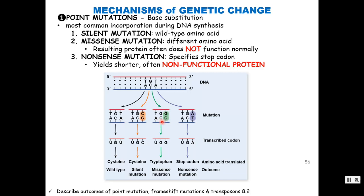If we change that same nucleotide from an A to a C instead, the codon on the RNA changes to AGG — that's a missense mutation, giving a substitution of amino acids. Whether this matters depends on the chemical nature of that amino acid. If the substitute is very similar in structure, you might get away with it. If it's completely different — say hydrophobic replaced by an acidic amino acid — that's probably going to cause problems, changing the protein's shape so it no longer functions normally.